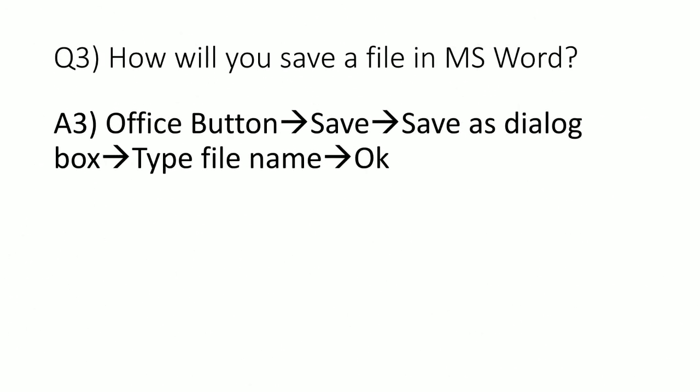Question number 3: How will you save a file in MS Word? Answer: Select Office button, then save. A Save As dialogue box will appear. Type the file name, then click OK. Steps: click Office button, click save option, Save As dialogue box will appear, type file name, then OK.